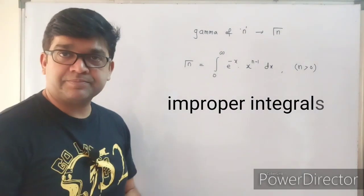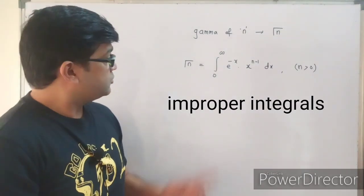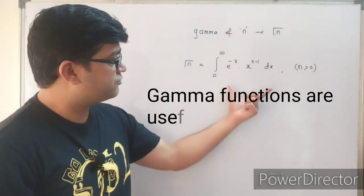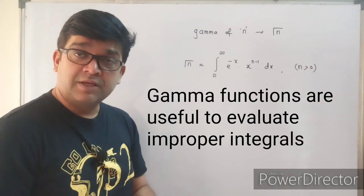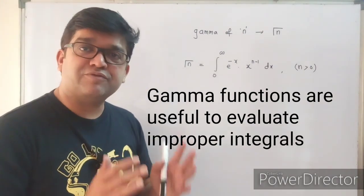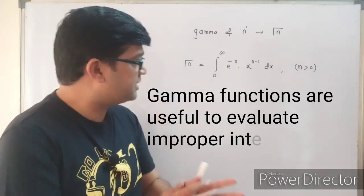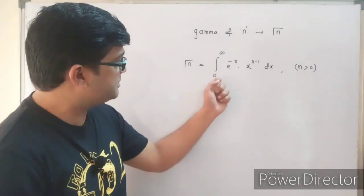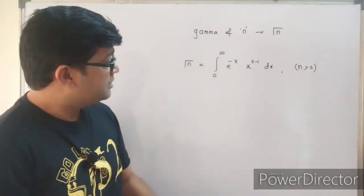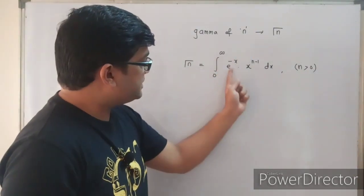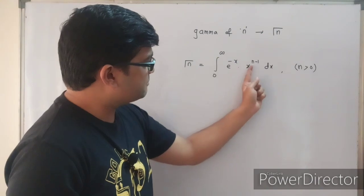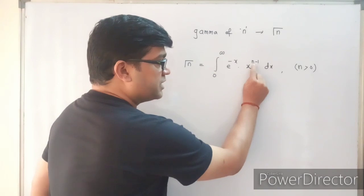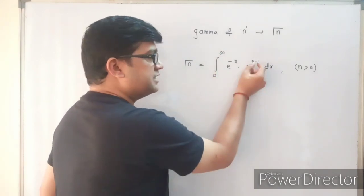This gamma function definition helps us evaluate improper integrals — integrals whose limits are 0 to infinity. Looking at the integral from 0 to infinity of e raised to minus x into x raised to n minus 1, the power of x is n minus 1, so the value of this integral is Γ(n).